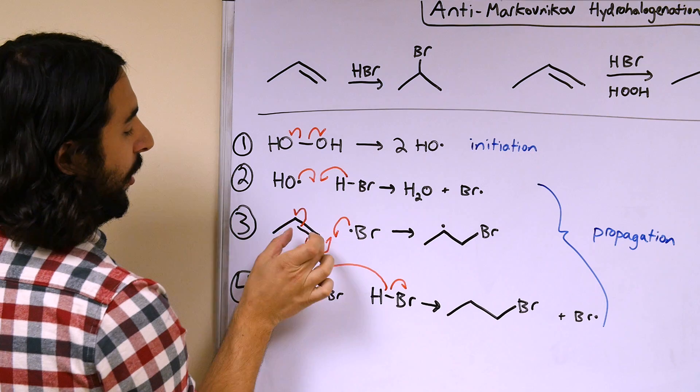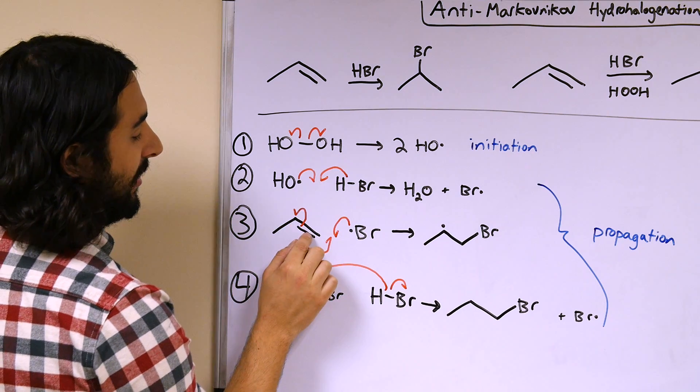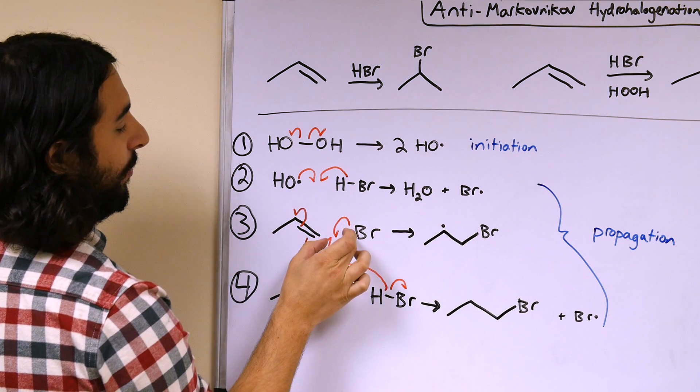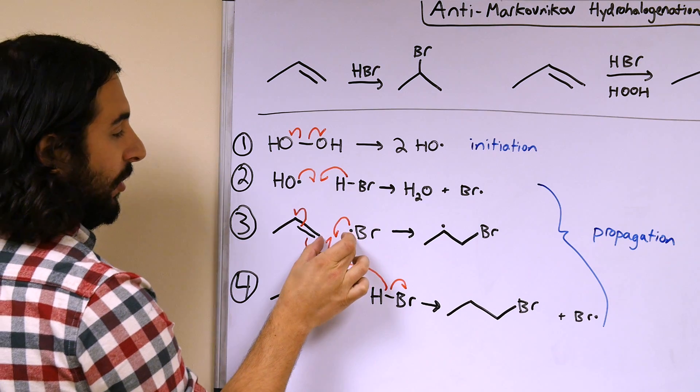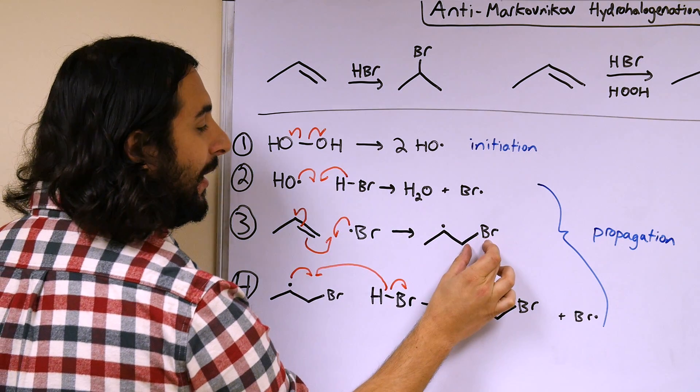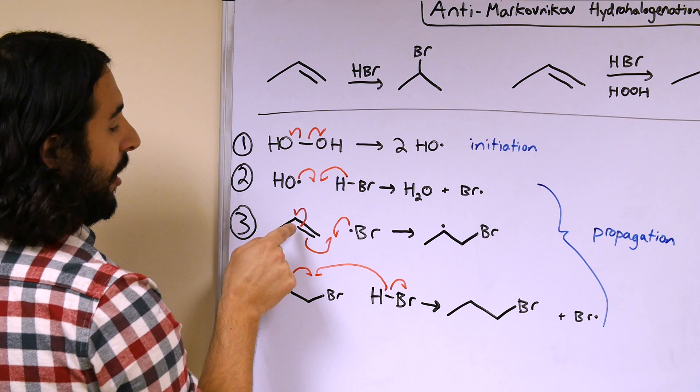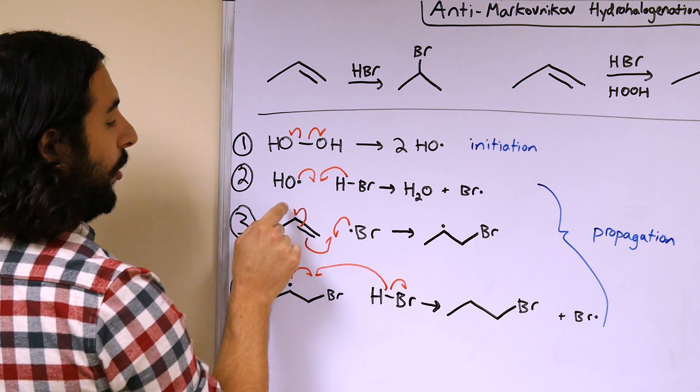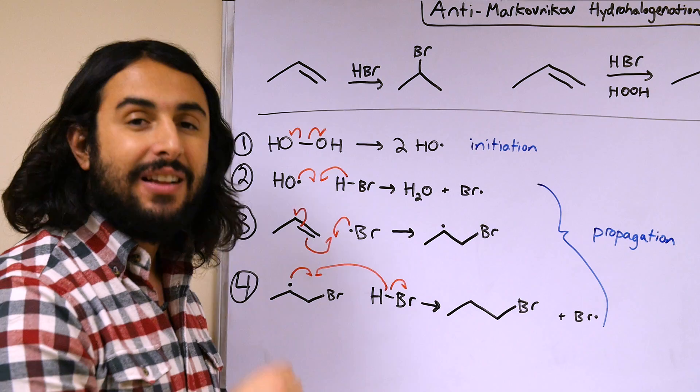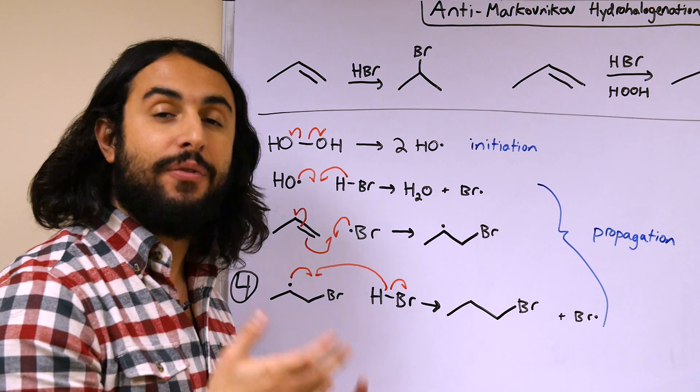So in other words, one of these pi electrons is going to go to form a covalent bond with this bromine radical and it is only going to happen here. Because if it does so, then the other pi electron will go to this carbon, the secondary carbon, leaving the more stable of the two possible alkyl radical intermediates.